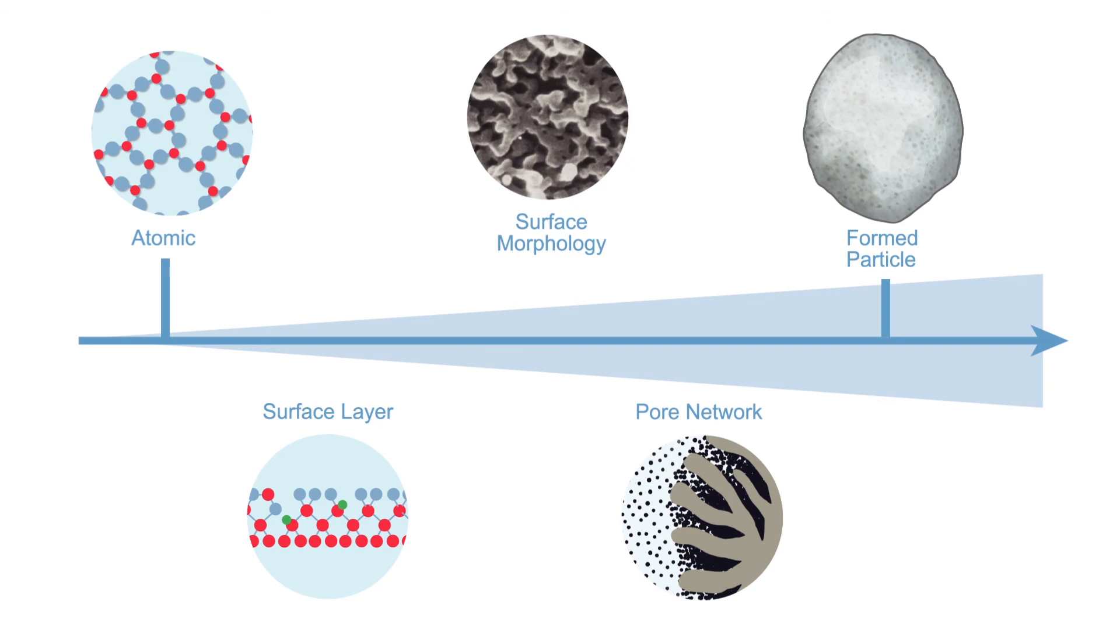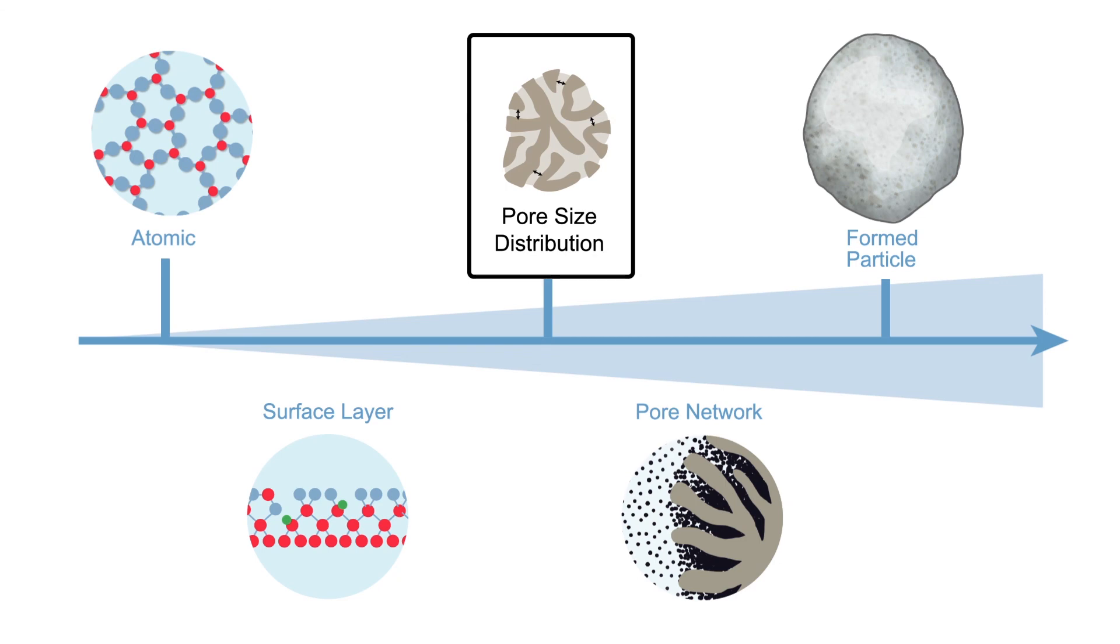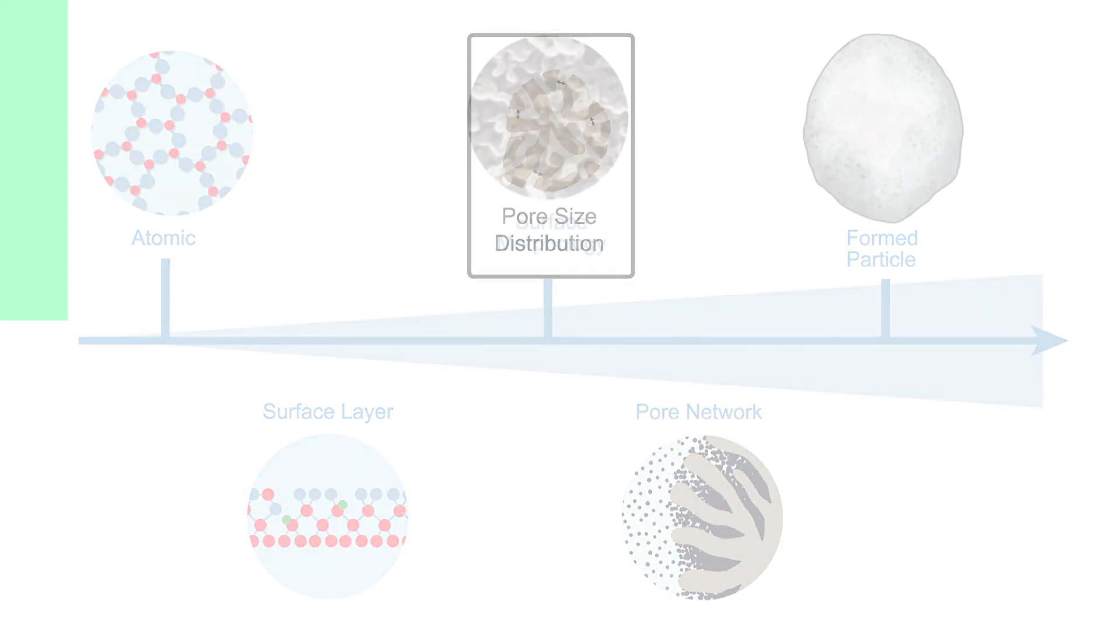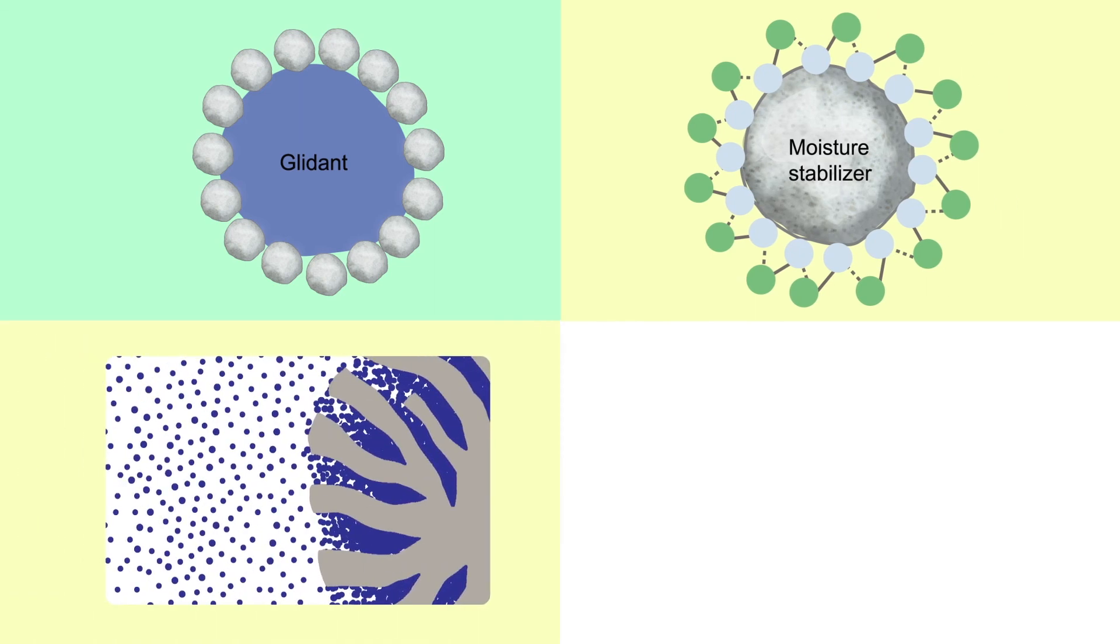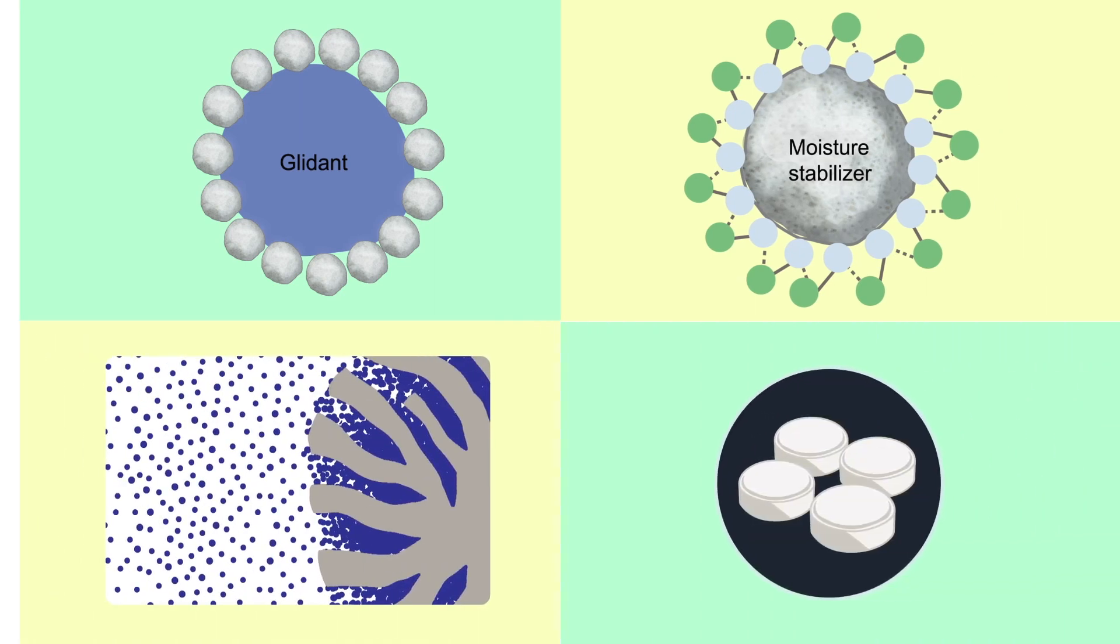But the key to getting more out of silica lies right in the middle. By building on the natural versatility of mesoporous silica, Grace has developed ways to engineer silica excipients to meet a variety of pharmaceutical needs, from glidants and moisture stabilizers to lipid carriers and even standalone drug delivery systems.